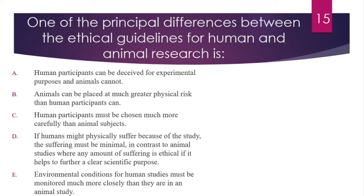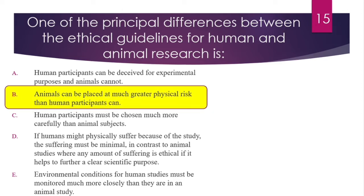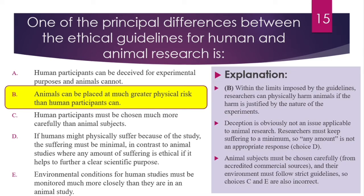Question number 15. One of the principal differences between the ethical guidelines for human and animal research is? The correct answer is B. Within the limits imposed by the guidelines, researchers can physically harm animals if the harm is justified by the nature of the experiment, but human participants cannot be physically harmed. Deception is not an issue applicable to animal research. Researchers must still keep animal suffering to a minimum — so any amount of suffering is not appropriate. Animal subjects must be chosen carefully from accredited commercial sources and their environment must follow strict guidelines. Choices C and E are also incorrect.